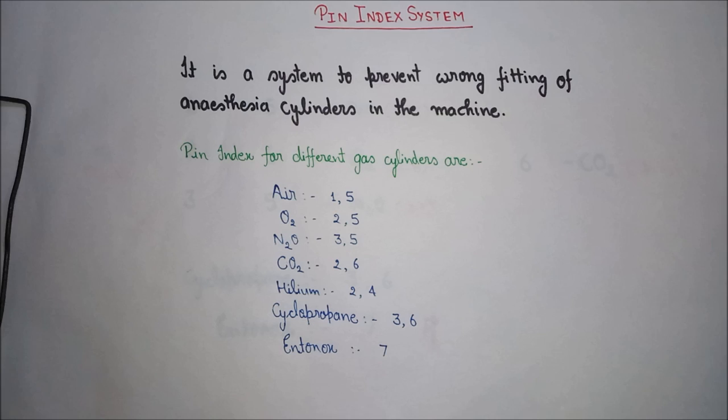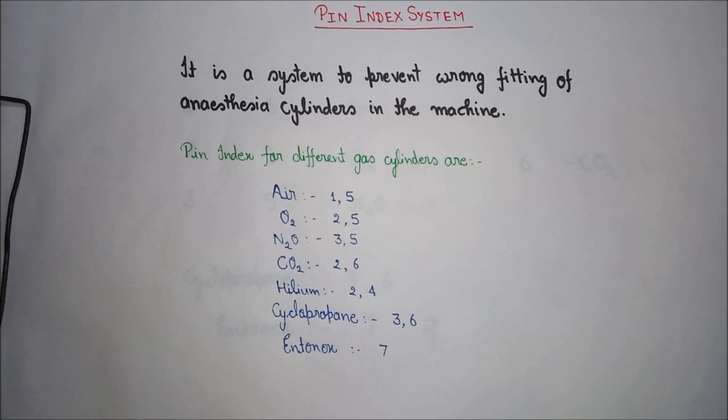The pin index values for different gas cylinders are: Air — 1,5; Oxygen — 2,5; Nitrous Oxide — 3,5; Carbon Dioxide (CO2) — 2,6; Helium — 2,4; Cyclopropane — 3,6; and Entonox — 7.